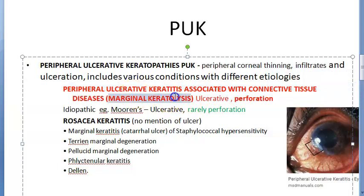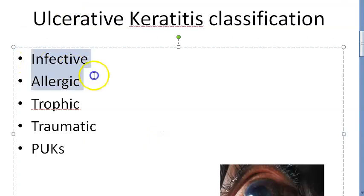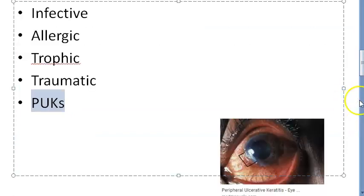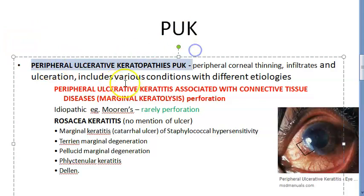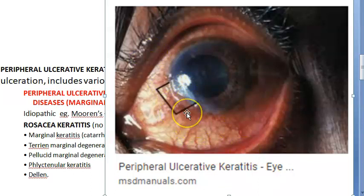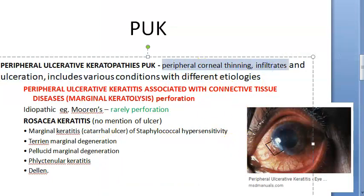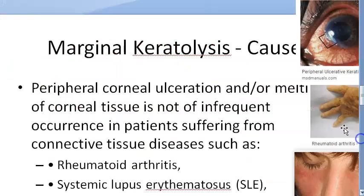This is a type of ulcerative keratitis — inflammation of the cornea. Under keratitis you have many causes, and under peripheral ulcerative keratopathy specifically, if the cause is a connective tissue disease, then you call it marginal keratolysis. The image here shows the peripheral cornea with thinning and ulceration due to connective tissue diseases.